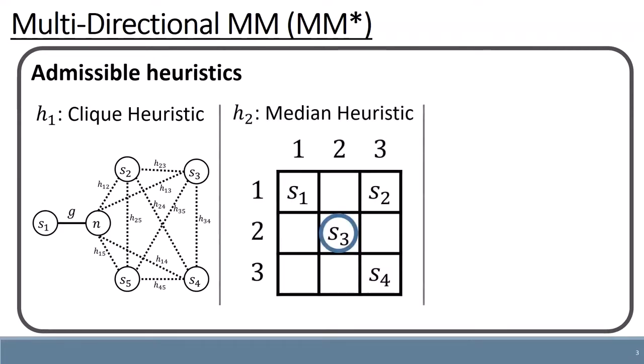H2, the median heuristic, is designed for grids. We compute the median location over both dimensions of the grid. This location is an optimal meeting location for an empty grid, and thus is admissible for grids with obstacles.